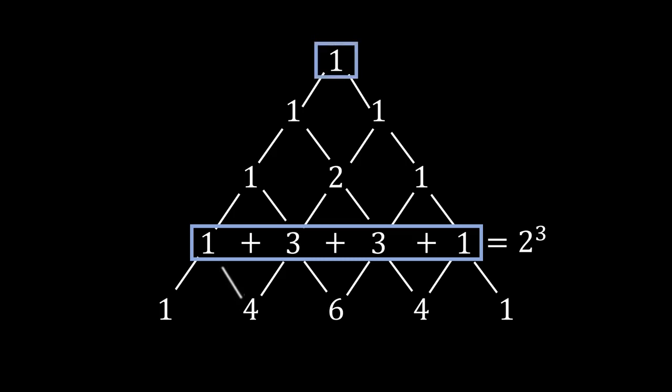An alternative way we could think of this is by choosing the path from the top point. And notice that at each point, there are two choices of paths to go down, either taking a down left step or a down right step. So therefore, the total path would be given by 2 times 2 times 2, which is just 2 cubed.